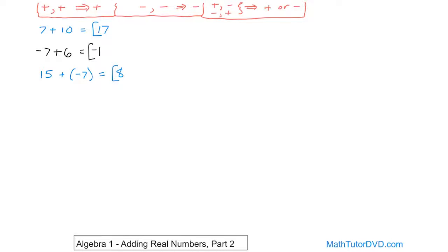The easiest way to get practice with this is just to keep doing problems. What if we have negative eight plus negative 21? We're adding two negatives together, so we always get a negative number. You simply add the absolute values together, because if you take a negative number and add more negative to it, the answer is going to be more deeply negative. Eight plus 21 is 29, and the answer will be negative 29.